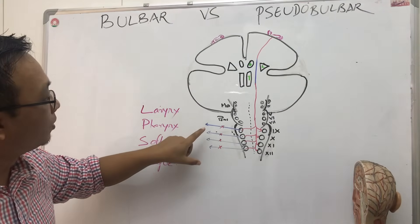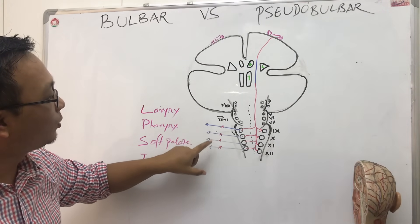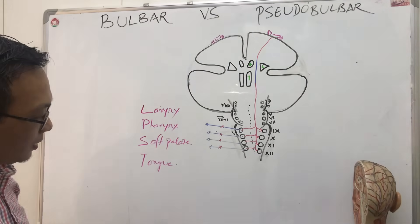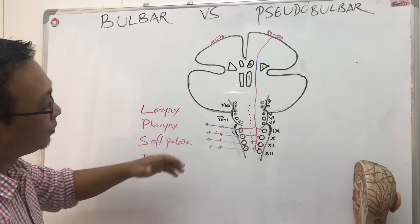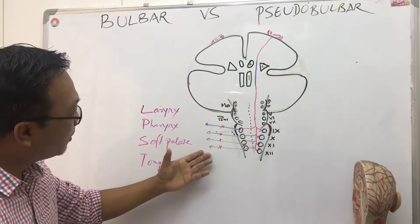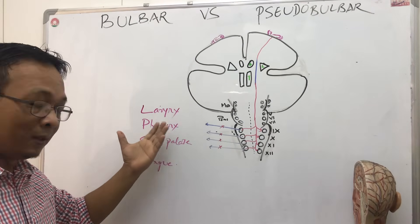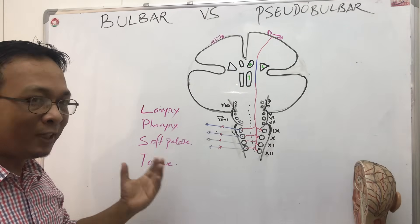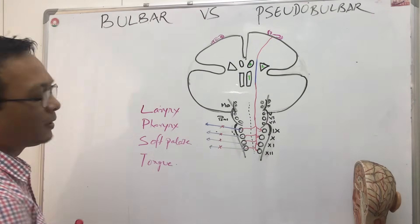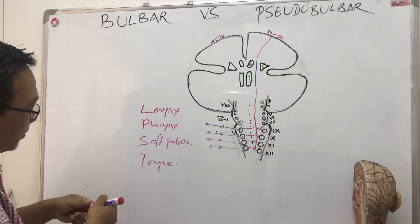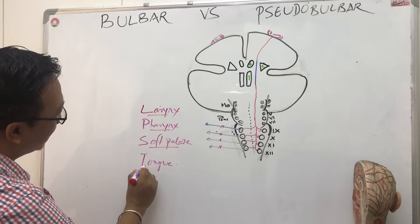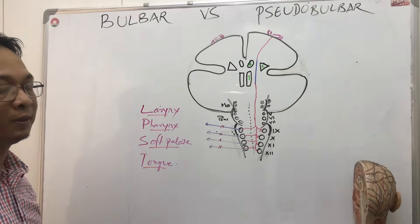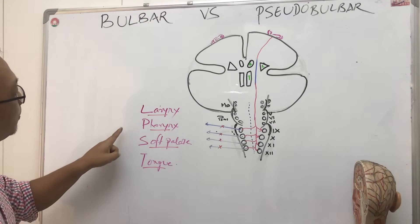Bulbar palsy involves nine, ten, eleven, twelve when there is lower motor neuron paralysis. The causes that can affect this level include inflammation, poliomyelitis — one of the earliest causes — and now more commonly Guillain-Barré syndrome. Toxins such as scorpion bites and snake venoms can also involve nine, ten, eleven, twelve, causing problems in the larynx, pharynx, soft palate, and tongue.